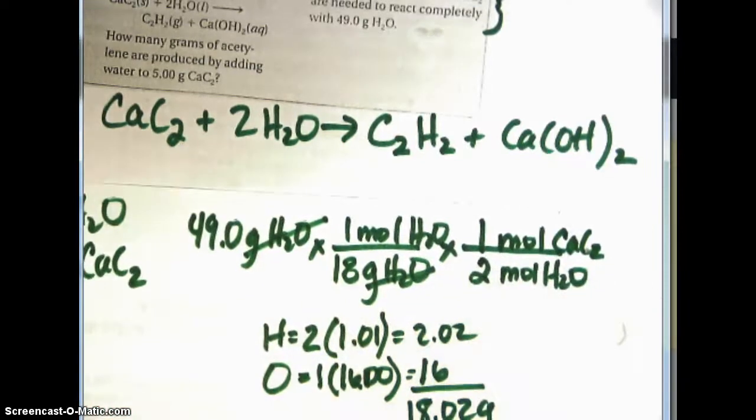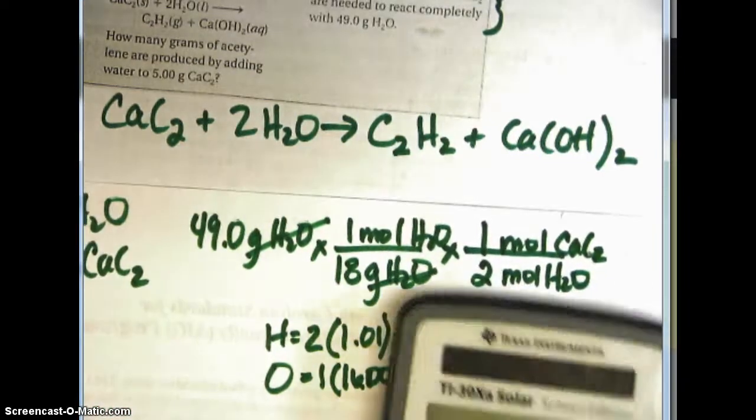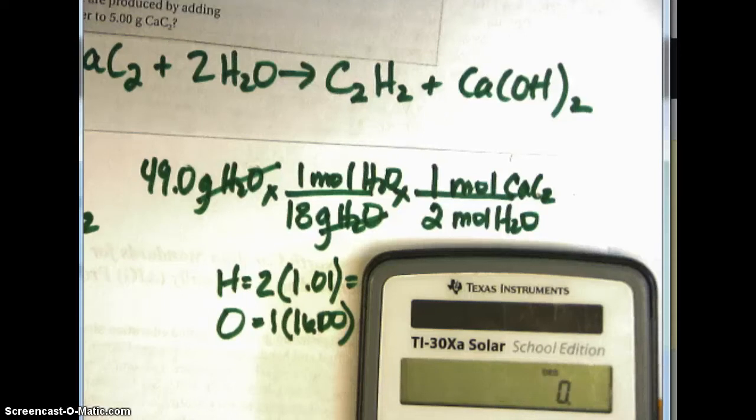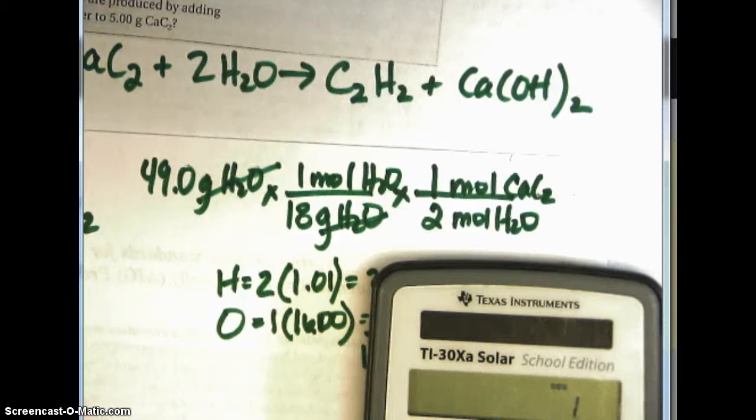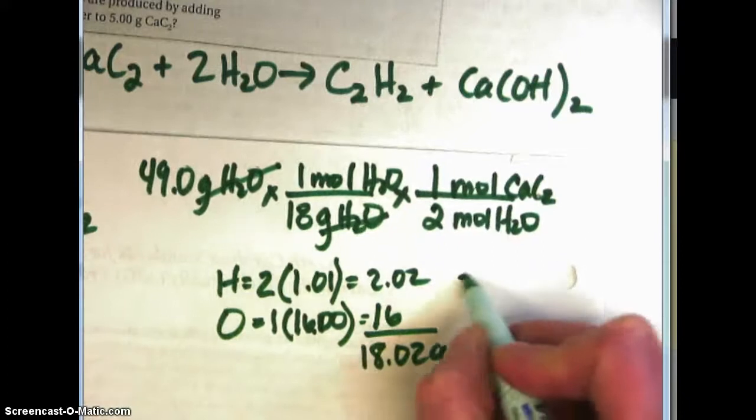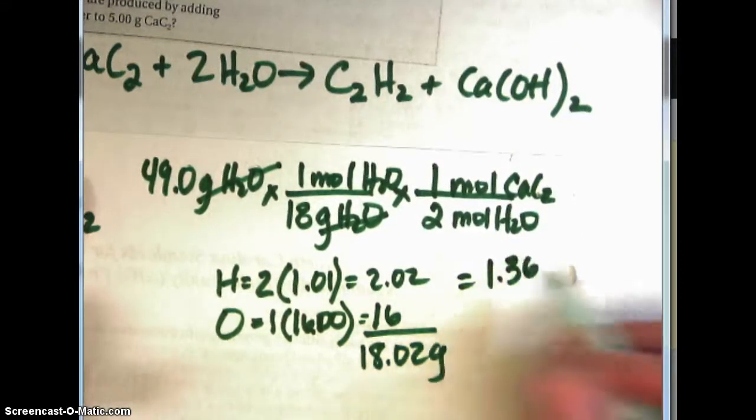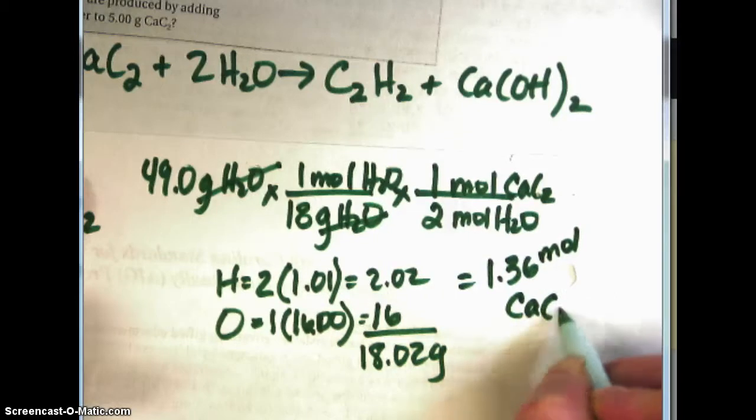And to calculate that I'm going to say 49 divided by everything on the bottom divided by 18 equals divided by 2 equals. So that equals 1.36 moles of calcium carbide.